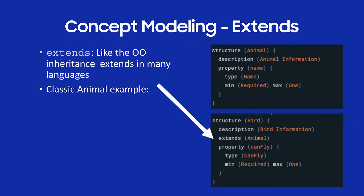Let's talk about extends. This is really from the OO extends model. You have a base structure — an animal structure with a property of name. Then I'm extending it: Bird extends Animal and I add the property 'can fly.' So just like OO extends, you extend it and then can add behavior to that.